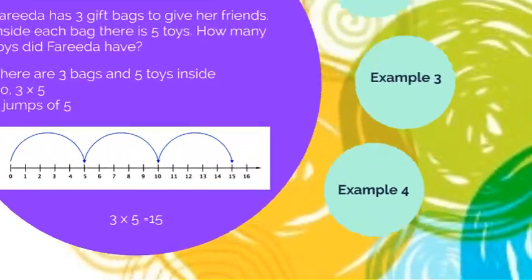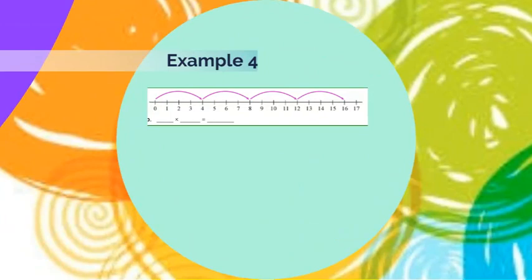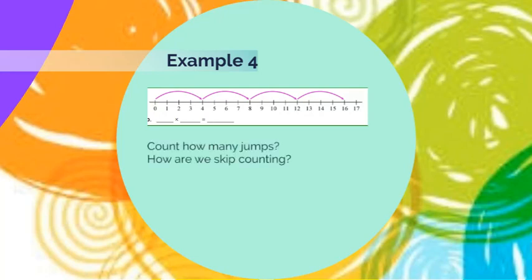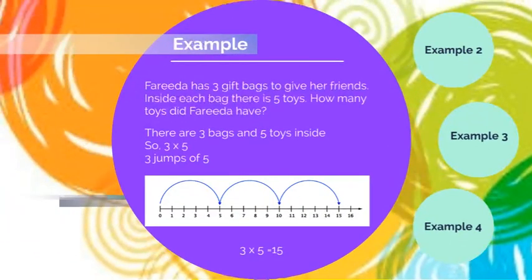Let us go with the last example of ours, which is going to be what are the two numbers that multiply to get the product of 16. Let's give it a try. Count how many jumps and how are we skip counting. So four jumps, skip counting by four, which is four times four, which equals to 16. So overall we have 16.